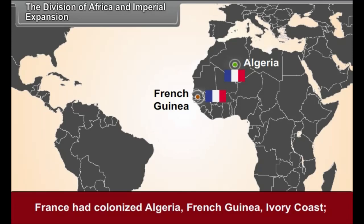King Leopold of Belgium erected a colony in the Congo River Basin. England, Germany, France, Italy, Spain, Portugal and Holland had their colonies in Africa.